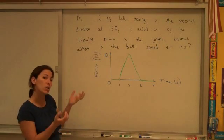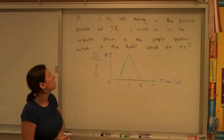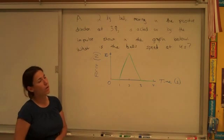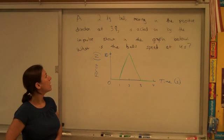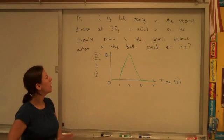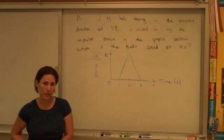Here's a video asking you to analyze a graph to help you solve a problem. A 2-kilogram ball moving in the positive direction at 3 meters per second is acted on by the impulse shown in the graph below. What is the ball's speed at 4 seconds?